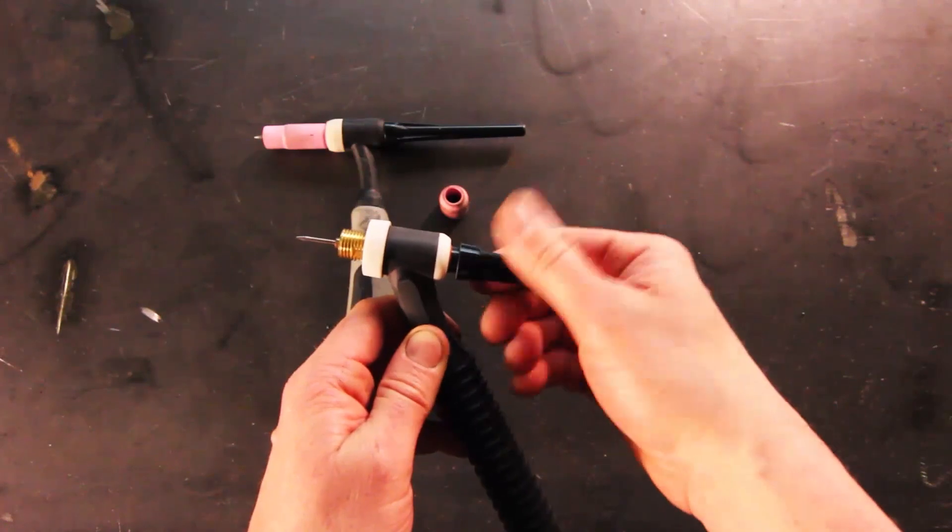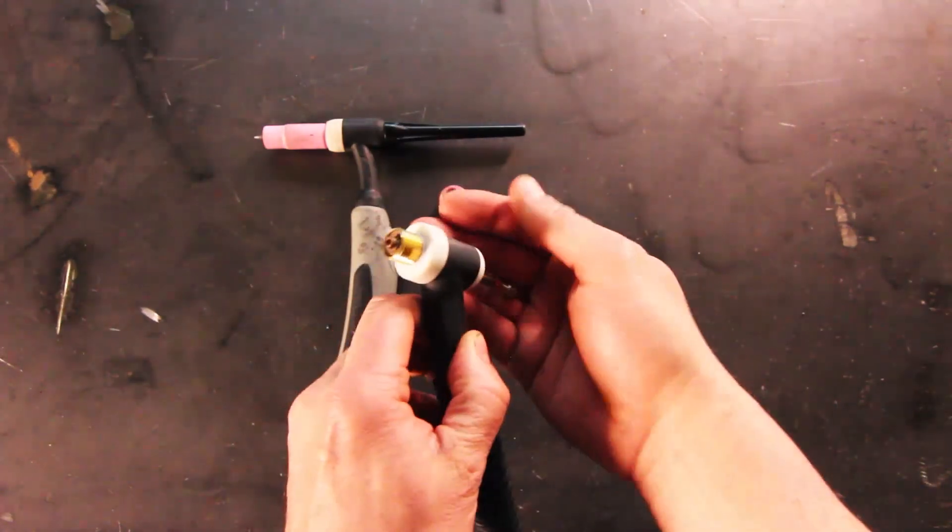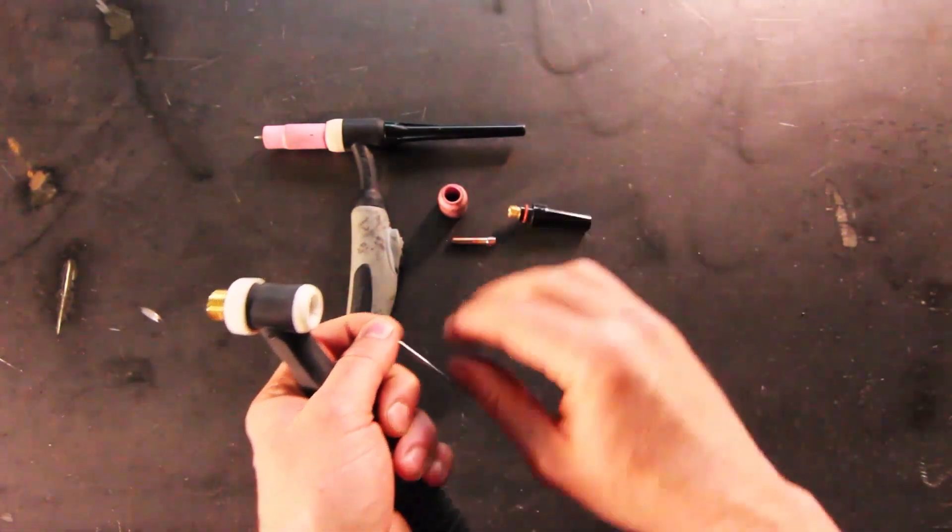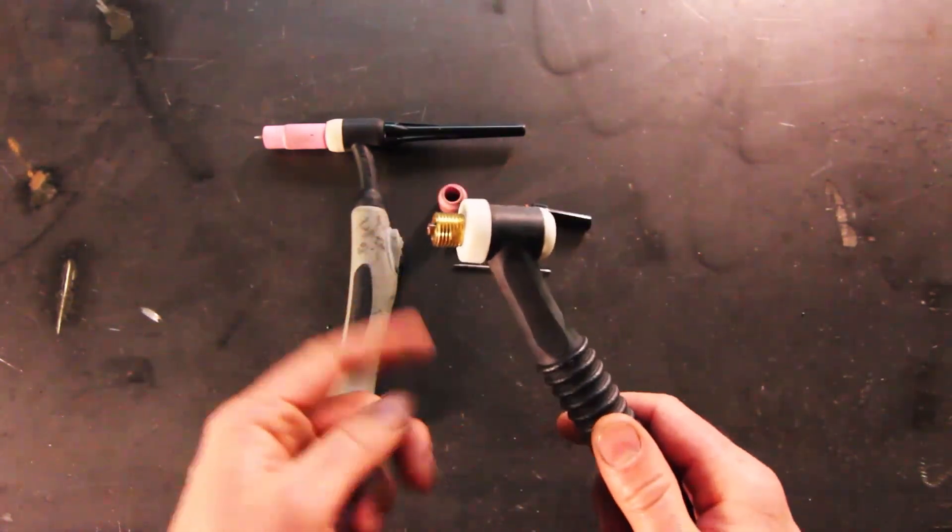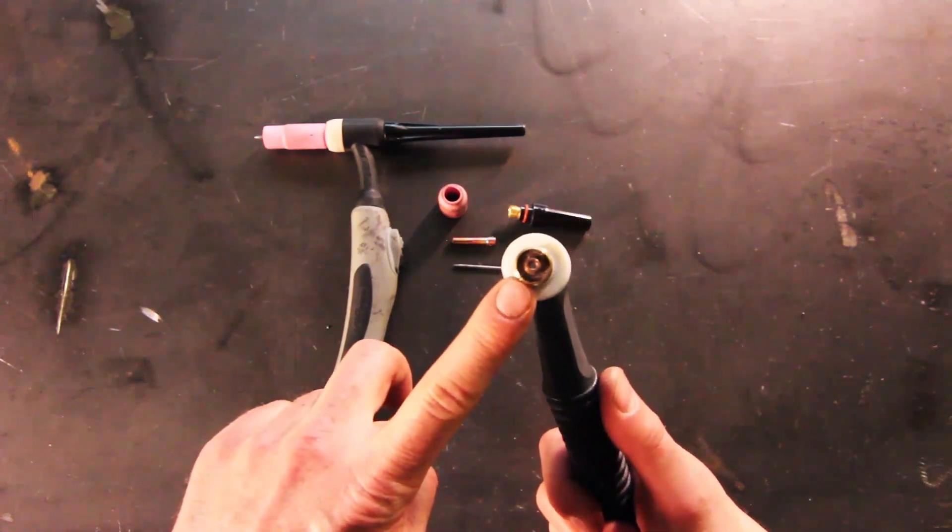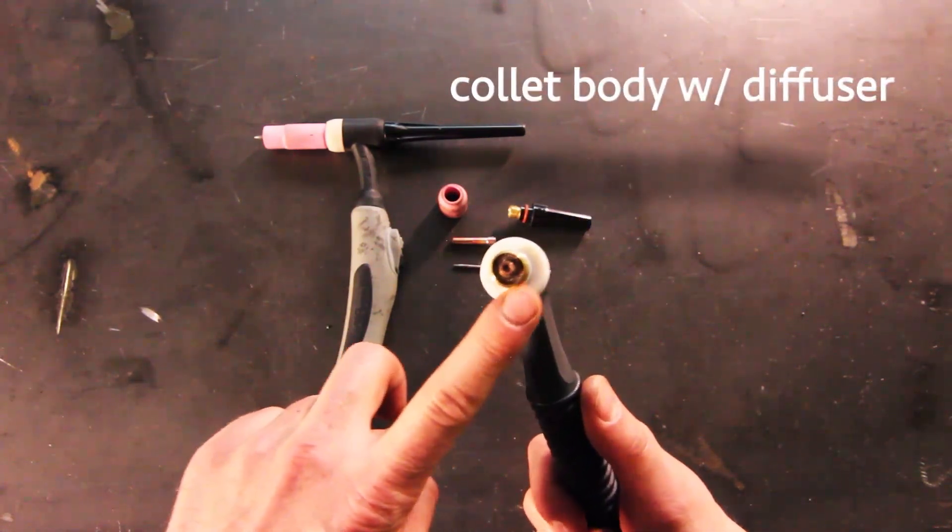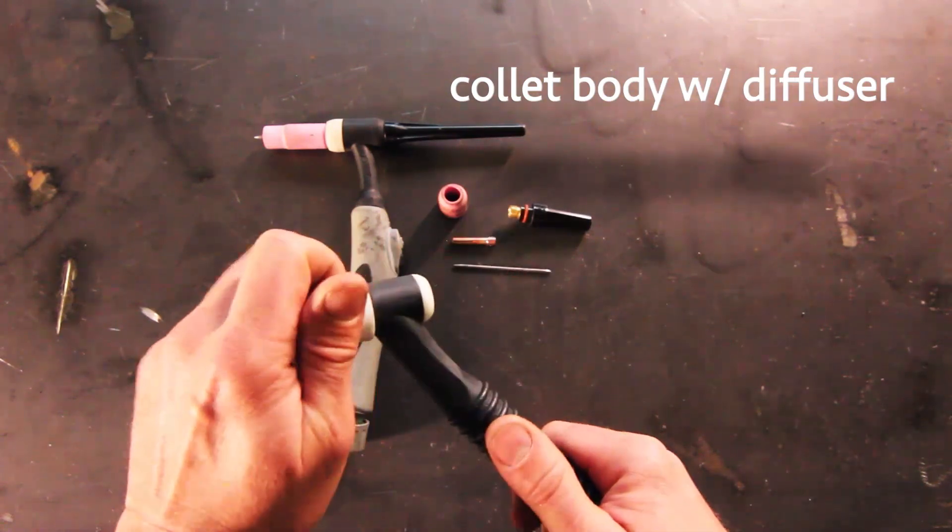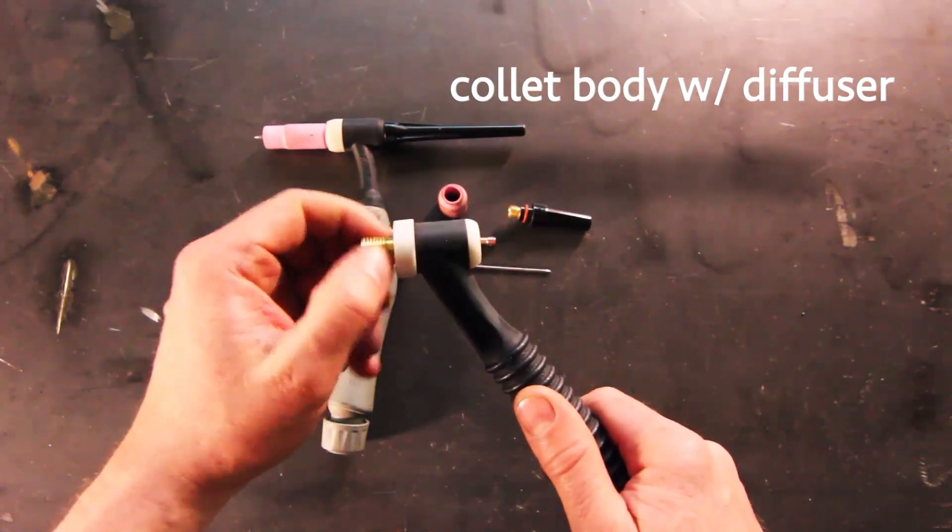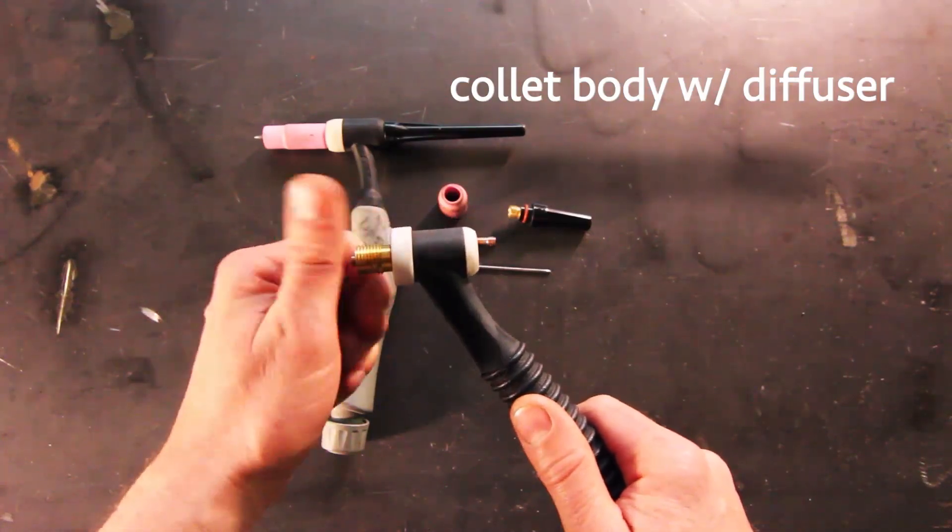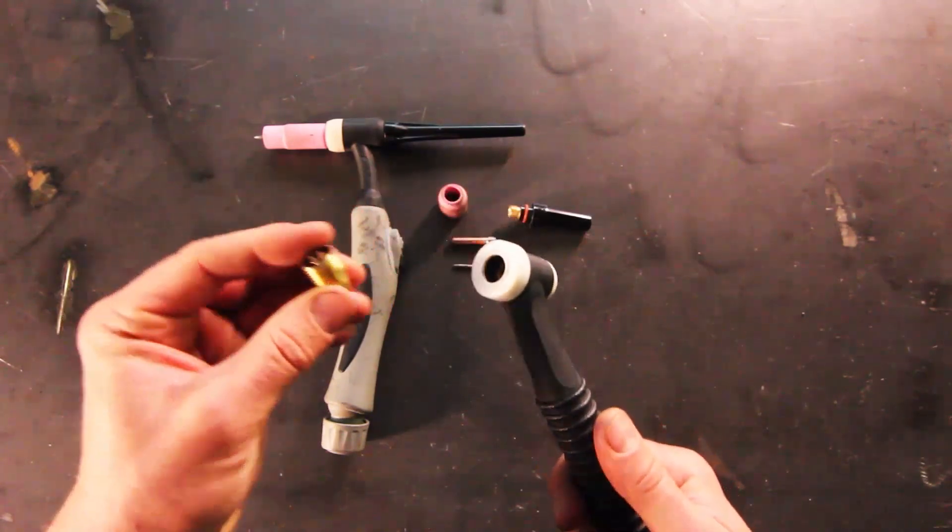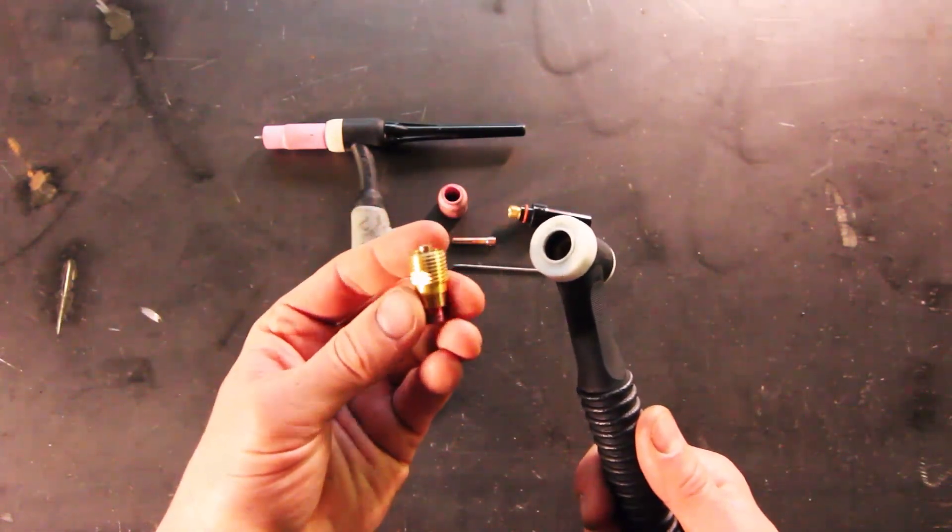You'll notice that the collet is much shorter as well. It's put together relatively the same way, but you can see that the collet body here has a diffuser in it. The diffuser is going to allow for better, more consistent shielding gas coverage getting to your weld. As you can see, you can just unscrew the diffuser here.